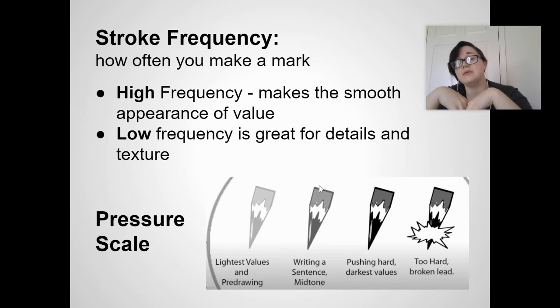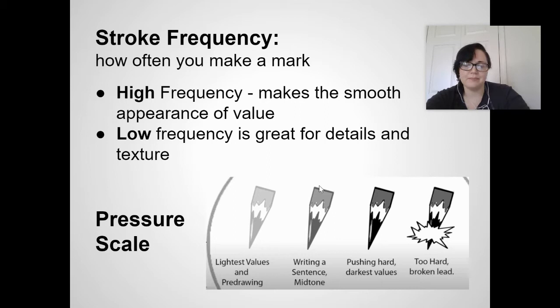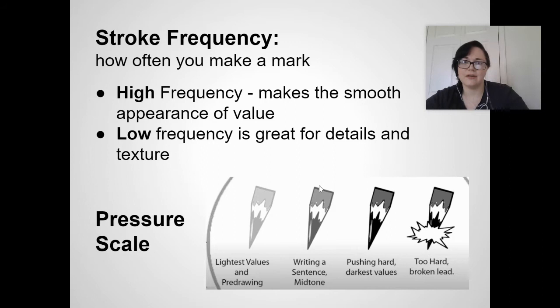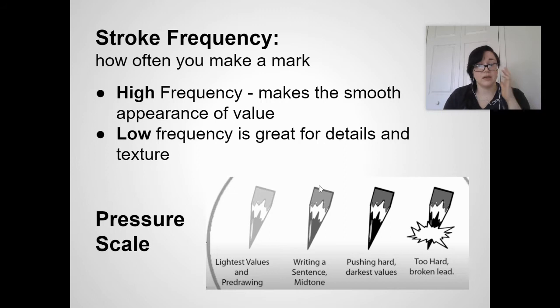To create value, you want to use something called stroke frequency — just how often you make a mark. You can have high stroke frequency or low stroke frequency. High frequency makes a smooth appearance, so we want to use high stroke frequency for value scales, with all the marks very close together. Low stroke frequency is great for details like texture. High frequency means a lot of marks; low frequency means few marks.